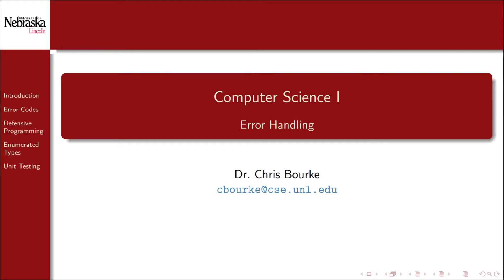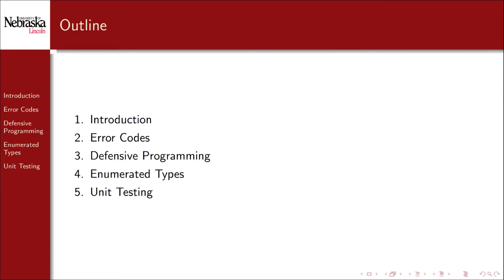Welcome back to this Computer Science 1 video series. In this module, we'll cover error handling. This module is broken up into five parts. In the first part, we'll give an introduction to error handling and several different strategies. In the second part, we'll cover how the C standard library approaches error handling using error codes. We'll then cover how to use a similar approach in our own functions, including related topics such as enumerated types and unit testing.